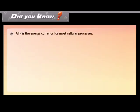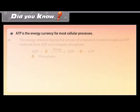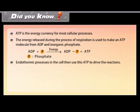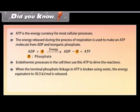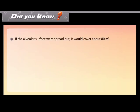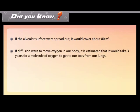ATP is the energy currency for most cellular processes. The energy released during respiration is used to make ATP from ADP and inorganic phosphate. Endothermic processes in the cell use this ATP to drive reactions. When the terminal phosphate linkage in ATP is broken using water, the energy equivalent to 30.5 kJ per mol is released. ATP can be used for contraction of muscles, protein synthesis, conduction of nervous impulses, and many other activities. If the alveolar surface were spread out, it would cover about 80 square meters. It is estimated that if diffusion alone were to move oxygen in our body, it would take 3 years for an oxygen molecule to travel from our lungs to our toes.